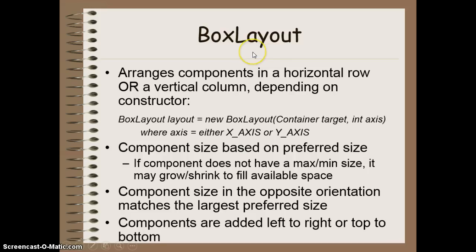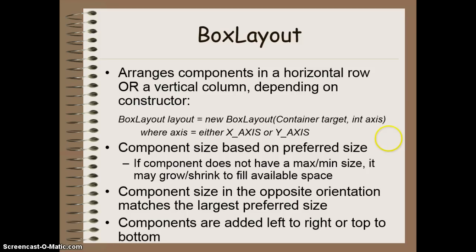The next layout manager is Box Layout, which arranges components either in a horizontal row or a vertical column — like a one-dimensional grid. In the constructor, you specify whether you want a horizontal X_AXIS or vertical Y_AXIS orientation. You also must provide the container as an argument, meaning you don't need to call setLayout separately since the layout is already set when you create the Box Layout object.